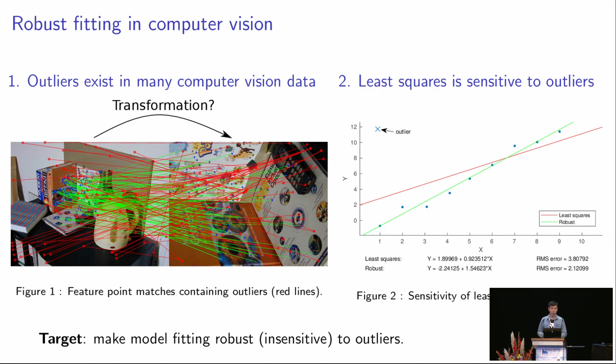In many computer vision applications, we want to fit a model given an input set of data. As we can see in the left figure, we are given an input set of feature matches and we try to compute the transformation between the left image and the right image. In these matches, the green ones are correct correspondences, which we call inliers, and the red ones are incorrect correspondences, which we call outliers.